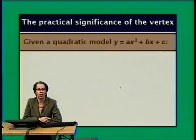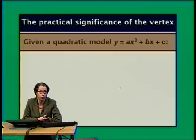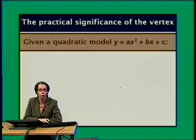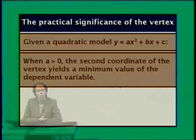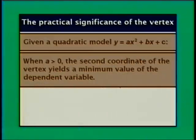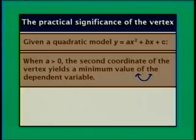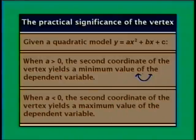To summarize: when thinking about the practical significance of the vertex of a quadratic model — when A is positive, the second coordinate of the vertex yields a minimum value of the dependent variable, because the parabola opens up. When A is negative, the second coordinate of the vertex yields a maximum value, because the parabola opens down.